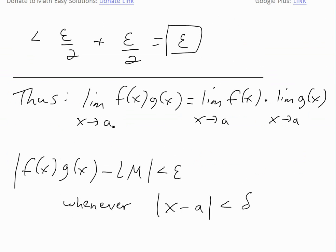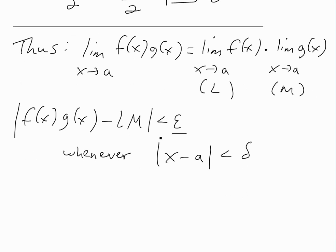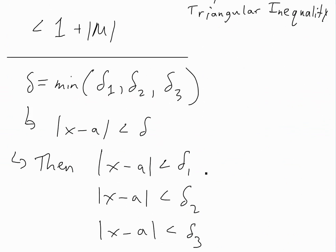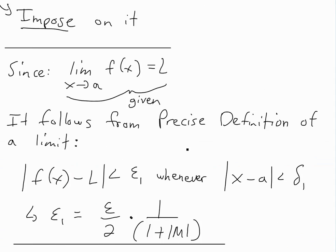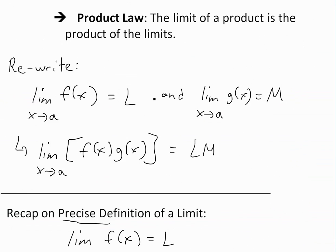To summarize: we have proven that the limit as x approaches a of f(x) times g(x) equals L times M — the product law. By the precise definition, the absolute value of f(x)·g(x) minus L·M is less than epsilon whenever x minus a is less than delta, where delta is the minimum of delta_1, delta_2, and delta_3. That's all for today. Once you get your head around the precise definition and the triangle inequality, it's pretty straightforward. You can download these notes in the Dropbox links below.